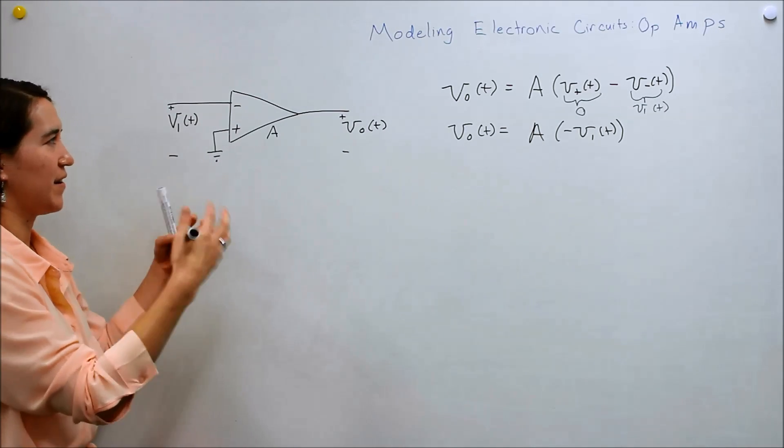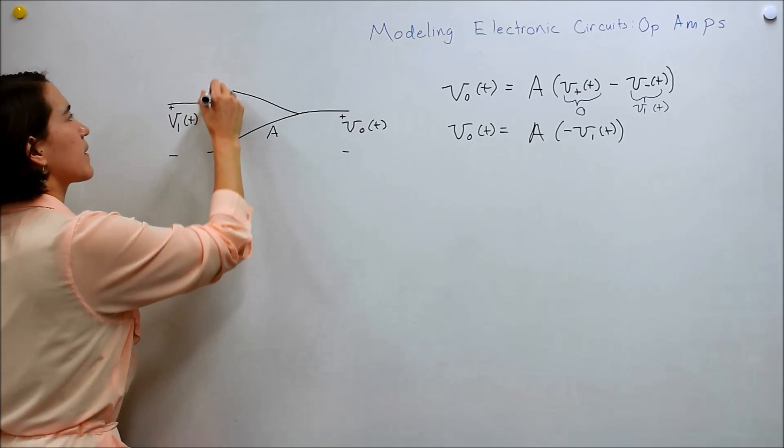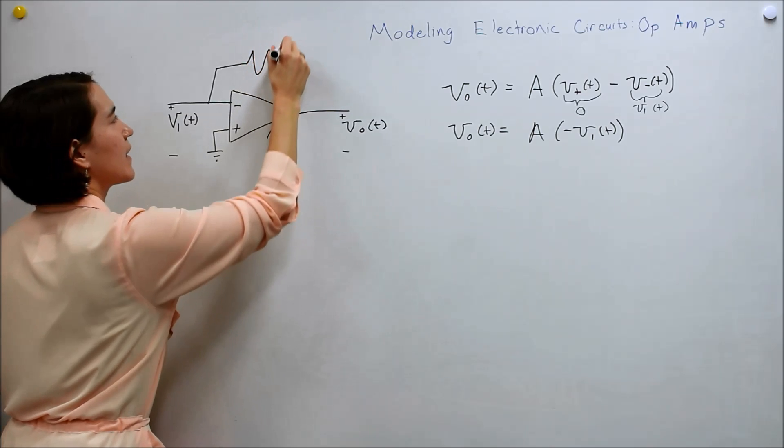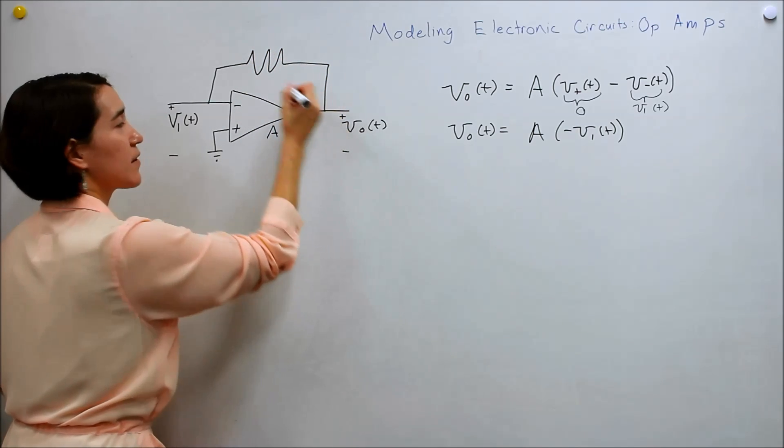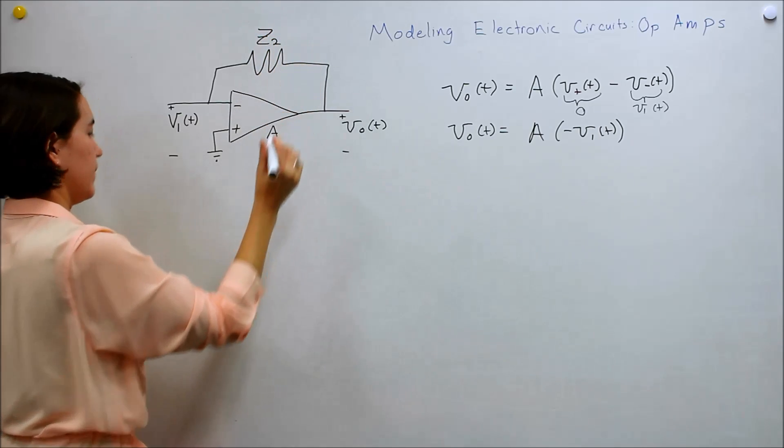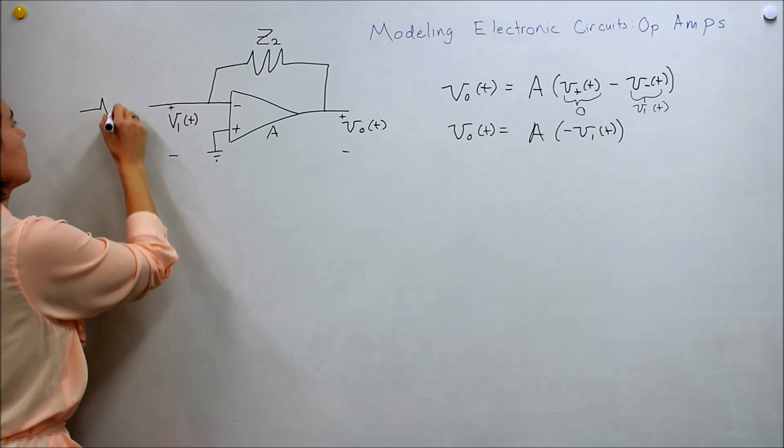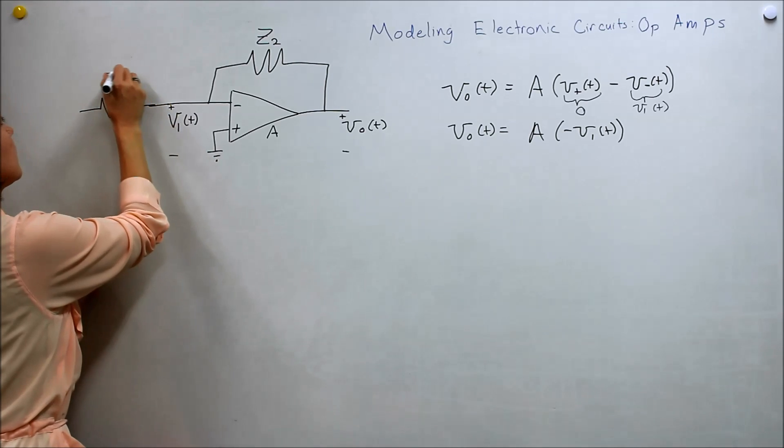So now let's make a more interesting system. So if you remember, this is a common feedback method. If you put some impedance here, I'll call this Z2. And we're going to add an impedance of the input. So this is Z1.